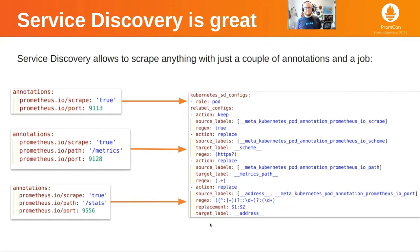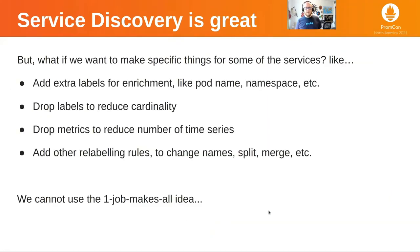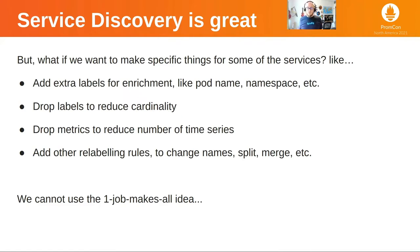This is great, but what if we want to do something special with some of the jobs or services — like adding some extra labels for enrichment, or dropping some labels of a metric that has high cardinality to reduce that, or directly dropping some metrics we don't use, or adding some relabeling we need for some metrics? We just cannot do that if one job handles everything.